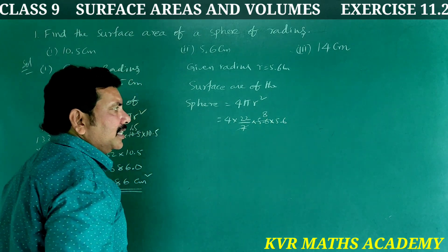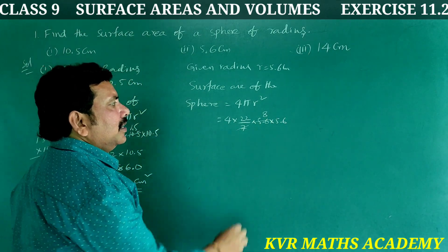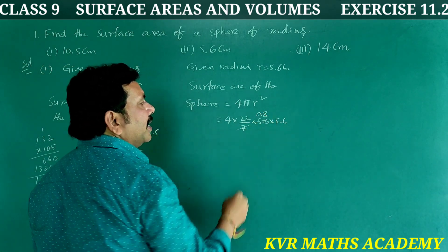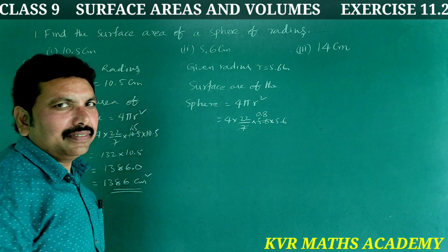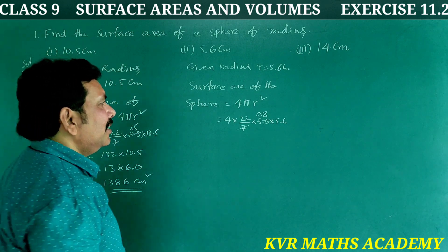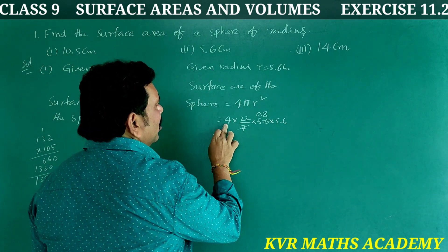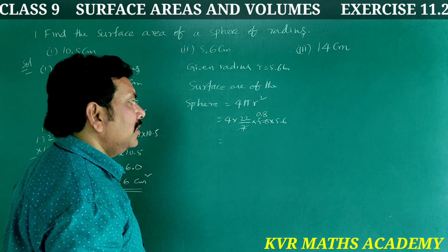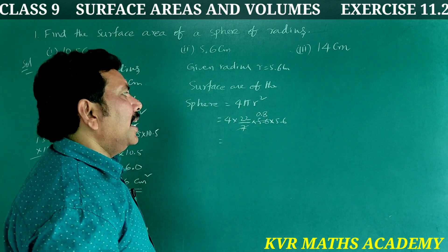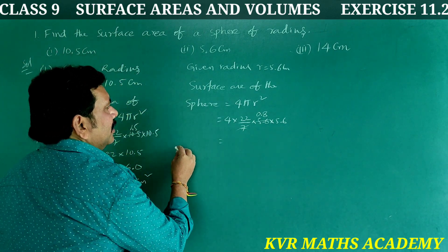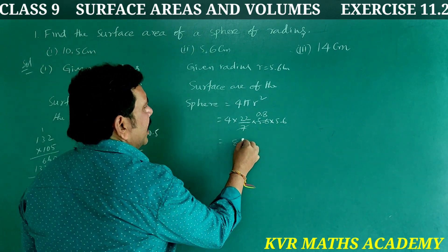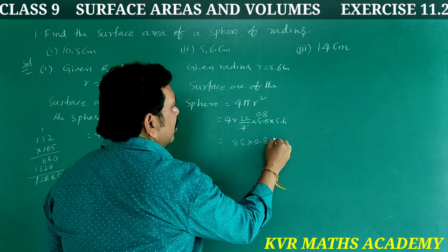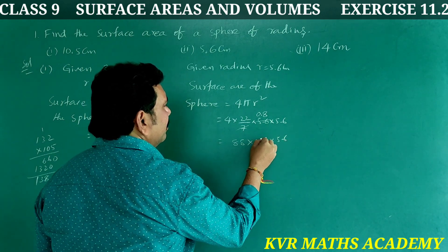7 goes into 5.6: 7 × 8 = 56, so 5.6/7 = 0.8. That gives 4 × 22 × 0.8 × 5.6. 4 × 22 = 88. So 88 × 0.8 × 5.6.